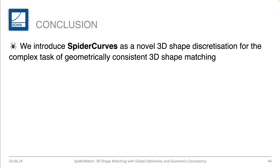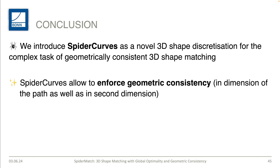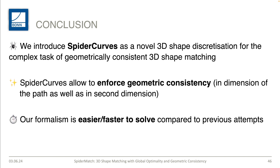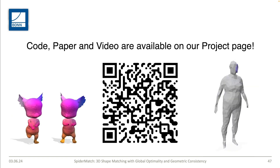In conclusion, we introduced spider curves as a novel 3D shape discretization for geometrically consistent 3D shape matching and potentially other tasks. With spider curves, we formulate an integer linear program enforcing geometric consistency in both the dimension of the spider curve and the second dimension. We have shown that our formalism is easier and faster to solve compared to previous attempts. Our code, paper, and video are all available on our project page.